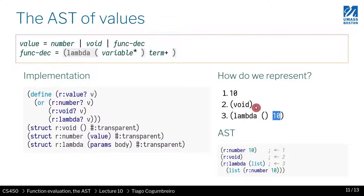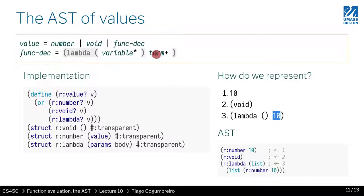I haven't introduced terms yet. As you might notice, this is a mutually recursive definition — values talk about terms and terms will talk about values. We'll postpone terms for now and focus on values, since values are terms. A simple example is the lambda that just returns 10, represented with an empty parameter list and a single (our-number 10) in the body.